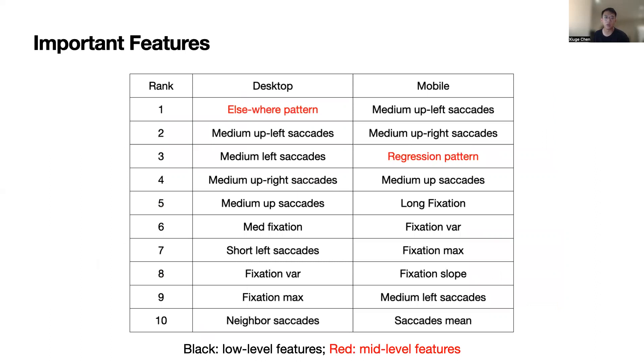Lastly, we explore major features that help the classification process. We found saccade features are particularly useful, especially features related to reading patterns such as left saccades and up-left or up-right saccades. Fixation also plays an important role here, but not as important as saccade features.